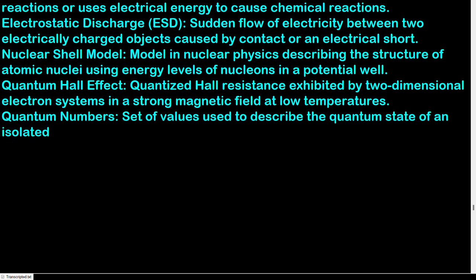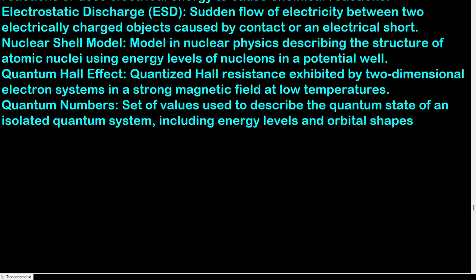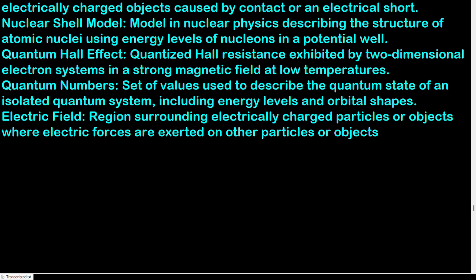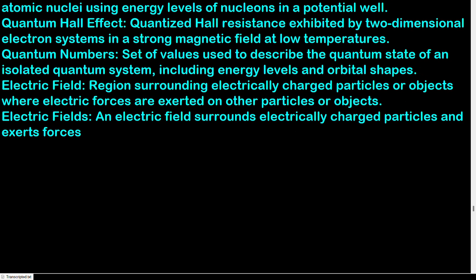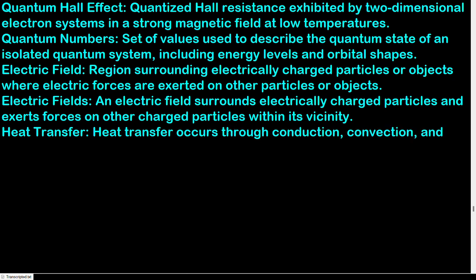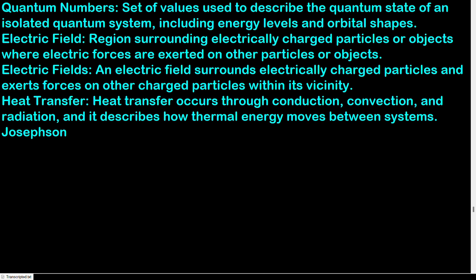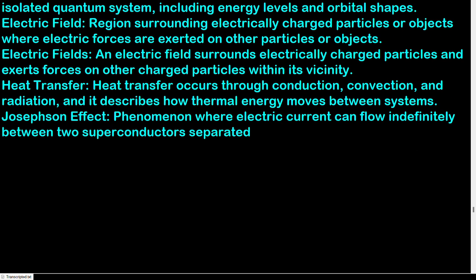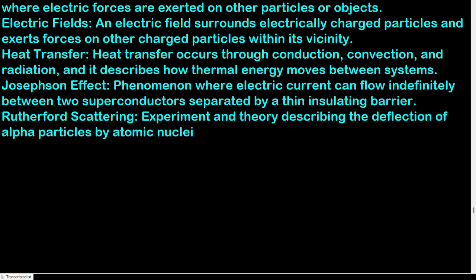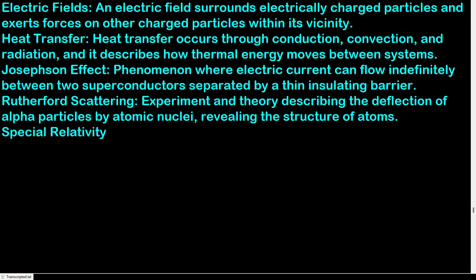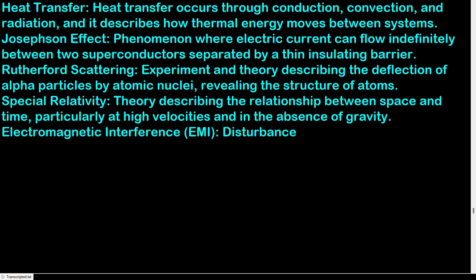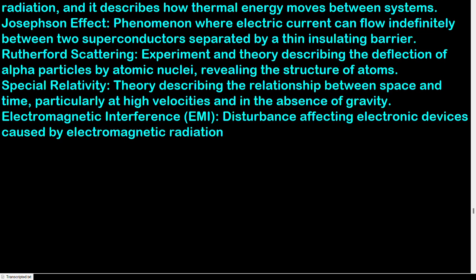Electric field: region surrounding electrically charged particles where electric forces are exerted on other particles or objects. Electric fields: an electric field surrounds electrically charged particles and exerts forces on other charged particles within its vicinity. Heat transfer: occurs through conduction, convection, and radiation, describing how thermal energy moves between systems. Josephson effect: phenomenon where electric current can flow indefinitely between two superconductors separated by a thin insulating barrier. Rutherford scattering: experiment and theory describing the deflection of alpha particles by atomic nuclei, revealing the structure of atoms. Special relativity: theory describing the relationship between space and time, particularly at high velocities and in the absence of gravity. Electromagnetic interference (EMI): disturbance affecting electronic devices caused by electromagnetic radiation or electromagnetic induction.